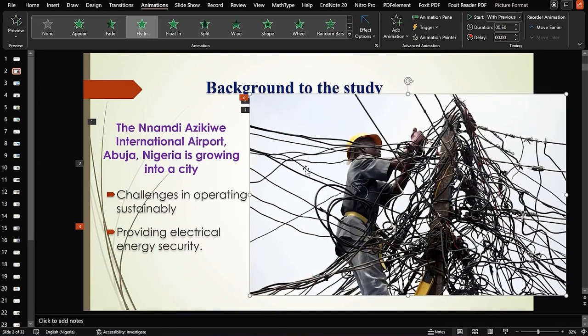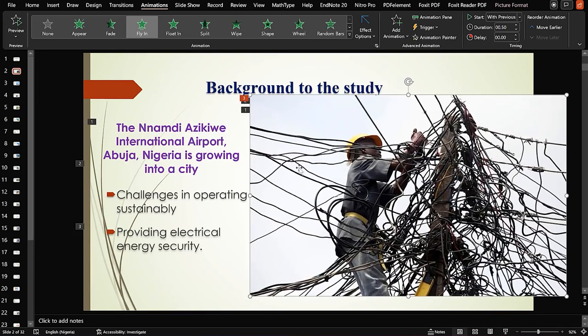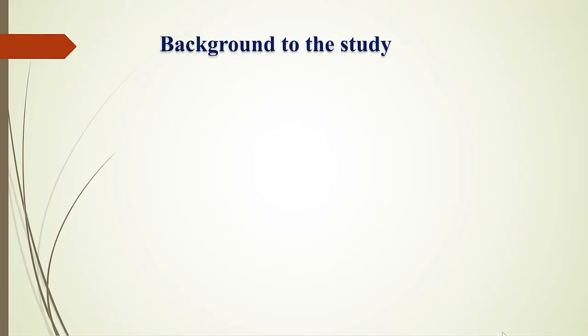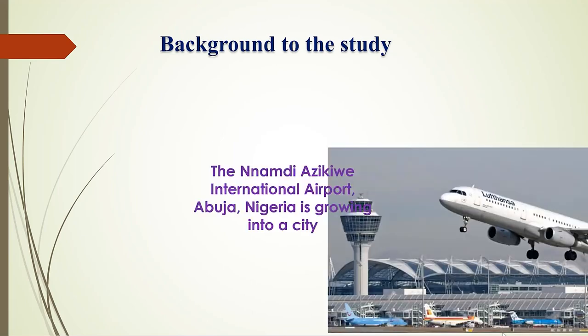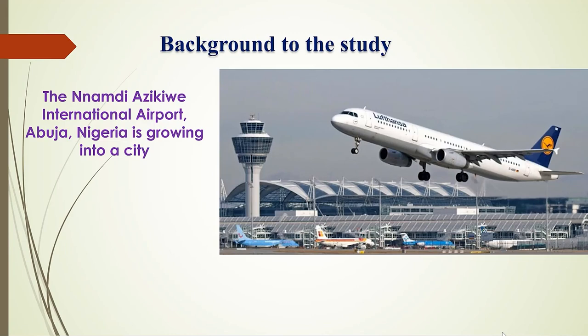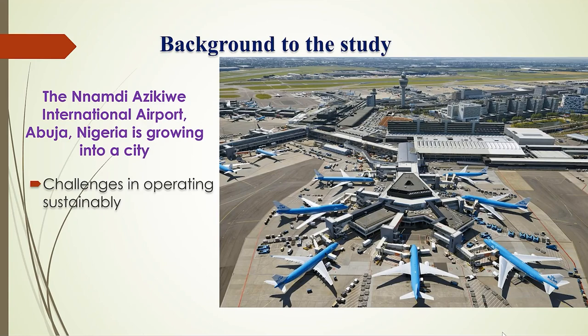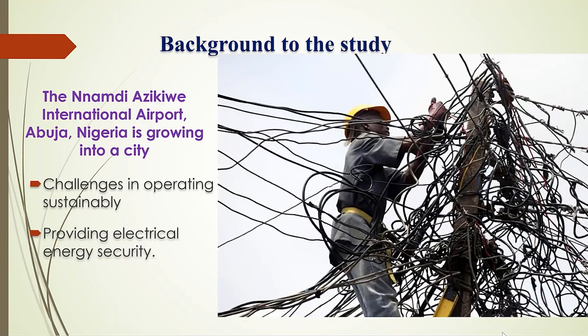We've gotten all of them in, so let's play the slides — put it on Slide Show mode and see what happens. The background comes first, and once we click the mouse, next it brings in the plane with the text 'Inamdizqa International Airport is growing into a city.' Then the next click brings in the sustainability and challenges of operating a given airport with many planes, and then the challenges of electrical energy within the airport.